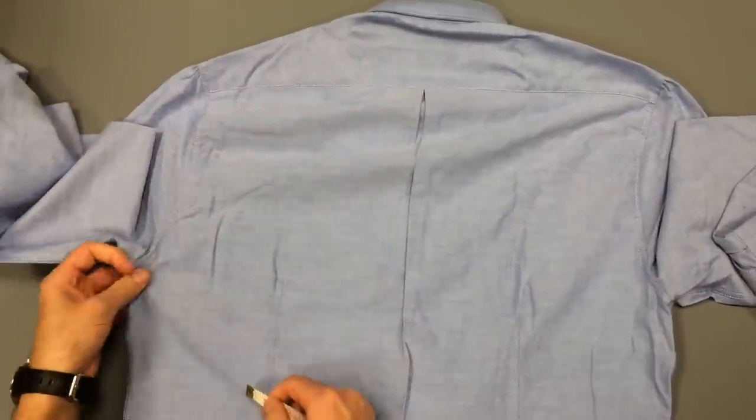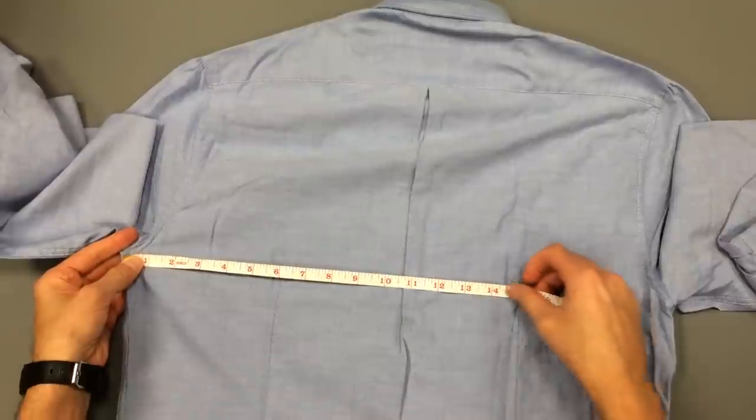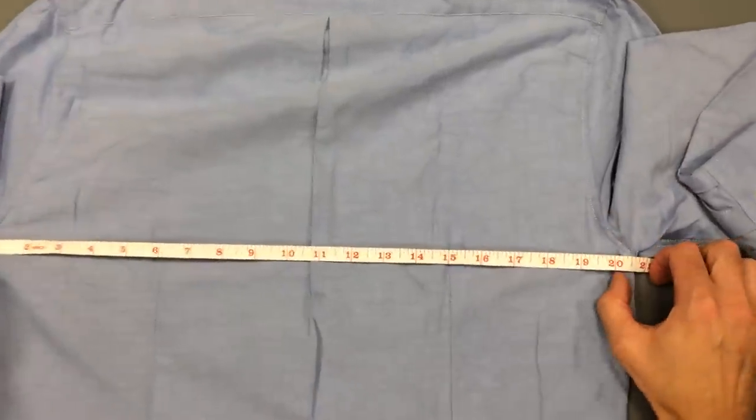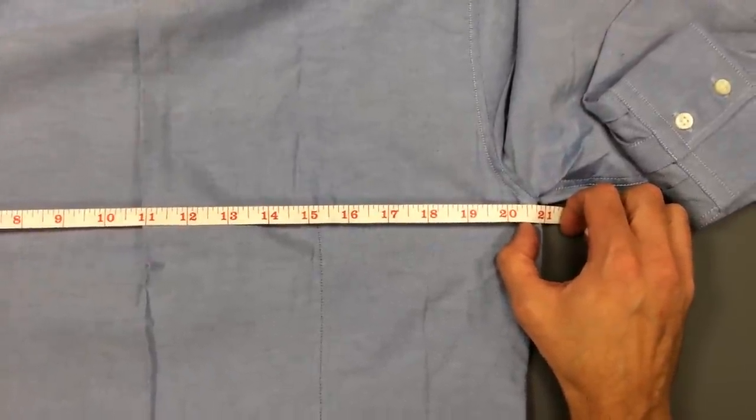First for the chest. This measurement is taken from pit to pit and then times by two. Here, twenty and three quarter inches times by two equals forty-one and a half.